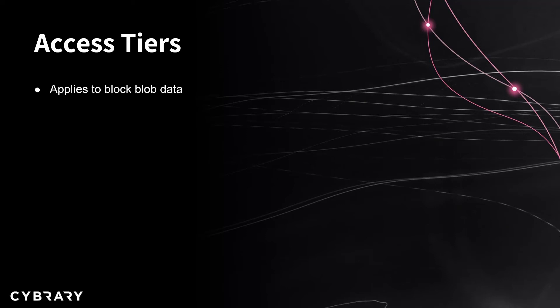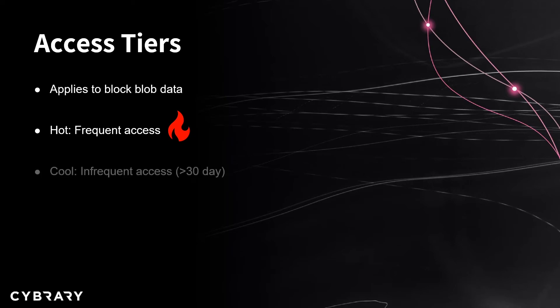These access tiers are going to apply to block blob data only, and we'll discuss what exactly that means in a later episode. Our first tier is the hot access tier. This is going to be for frequent access of data inside your storage account. Accessing data in the hot tier is going to be the most cost effective, but your storage costs are going to be higher. Whenever you create a new storage account, the hot tier is configured by default. Our next access tier is the cool access tier — this is for storing data that is going to be infrequently accessed, such as storing it for at least 30 days. So maybe if you have something that you're accessing once a quarter, the cool access tier would be the one for you.